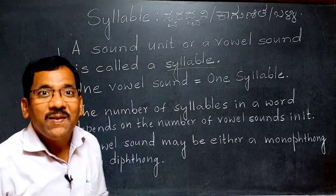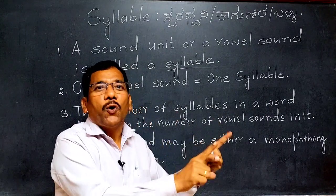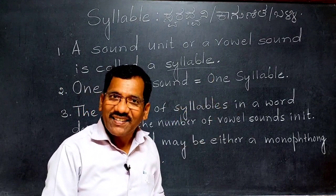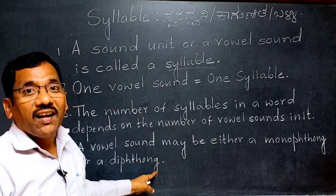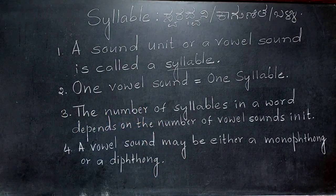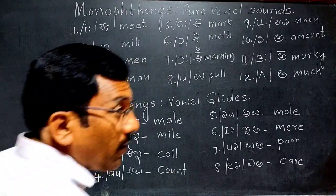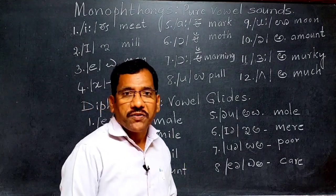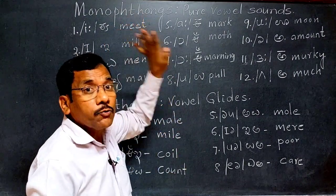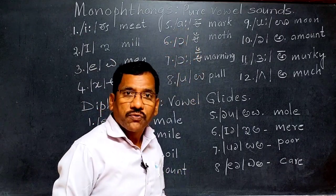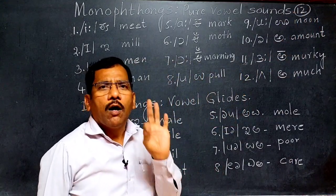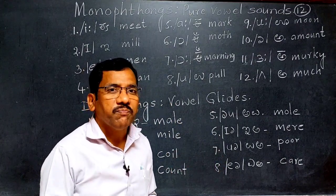A single vowel sound is called a monophthong, and a double vowel sound is called a diphthong. Please note it down. In English, monophthongs are also called pure vowel sounds. They are twelve in number. 'Mono' means one, and 'thong' means sound.